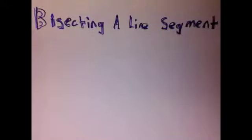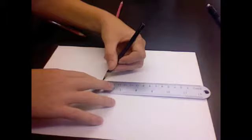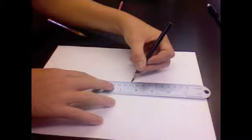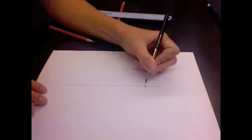This is how to bisect a line segment. First, put down a ruler and then draw a straight line. Next, draw two points on the line to create a line segment.